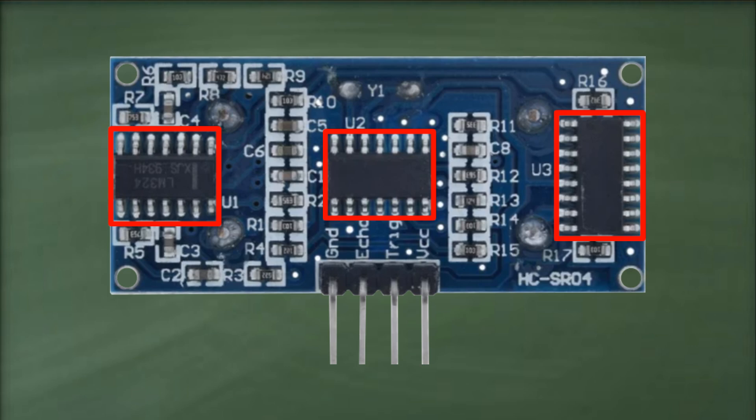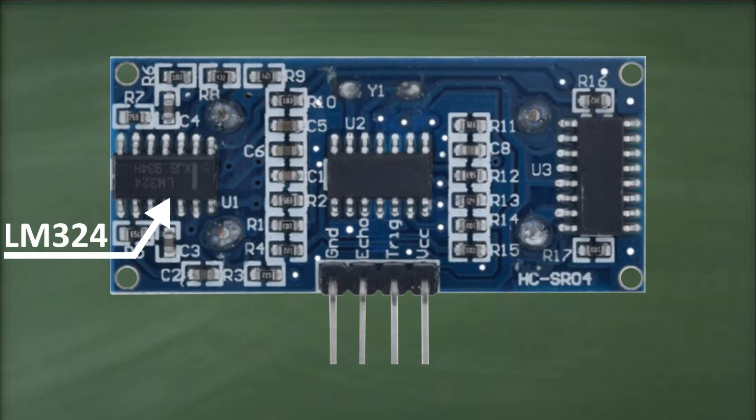On the back of the module, we have three ICs and several passive components like resistors and capacitors. The leftmost IC is the op-amp LM324, used to compare and amplify echoed signals, as the echoed signals have low magnitude.